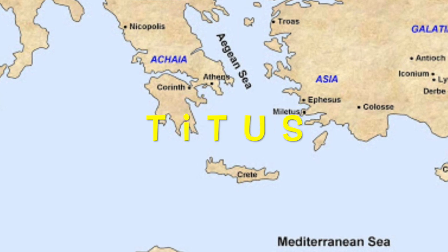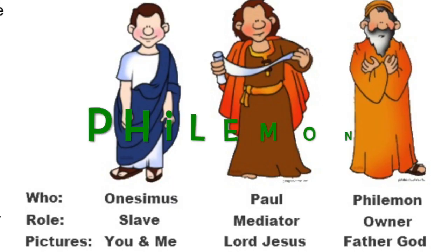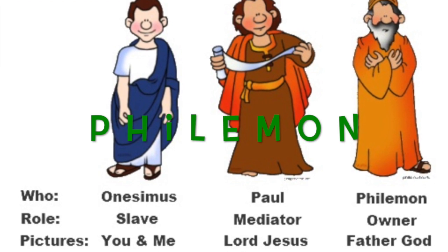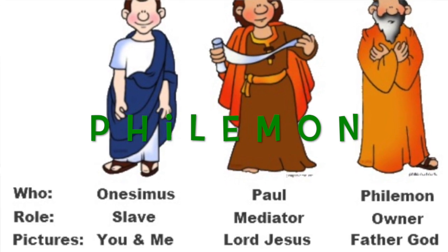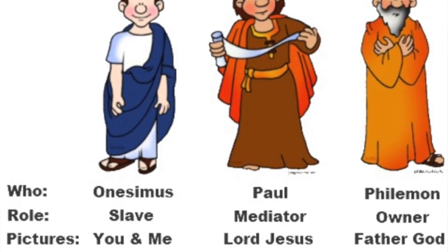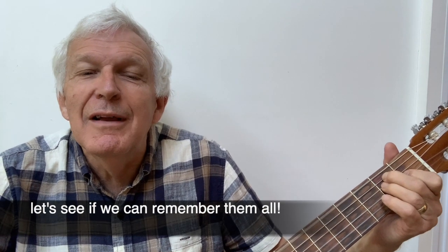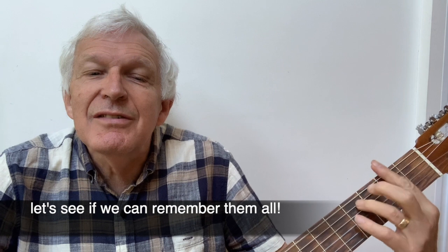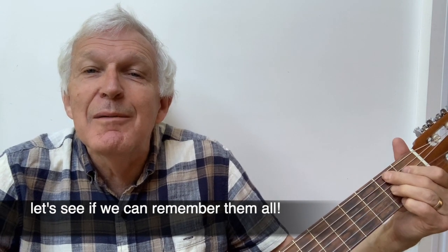Titus ordained good leaders in Crete. Philemon — Onesimus, forgive him when you meet. So that's the 13 letters of Paul. Let's see if we can remember them all.